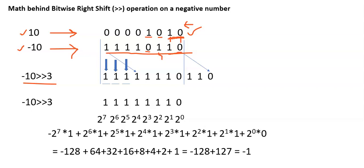Now we are performing minus 10 right shift 3 — that means we are shifting the bit values of minus 10 to the right hand side by 3 positions. The 1 is shifted to 3 positions to the right, and similarly each bit is shifted 3 positions right, so the entire value is shifted to the right by 3 positions.